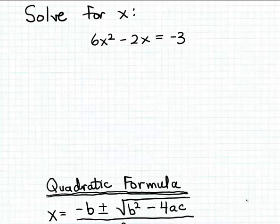In this example, we're going to solve a quadratic equation that has complex number solutions using the quadratic formula. Here's the quadratic equation that we want to solve: 6x squared minus 2x equals minus 3.